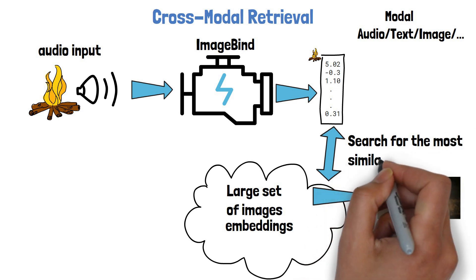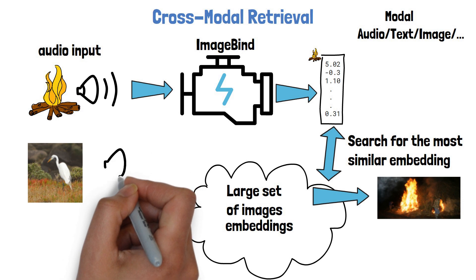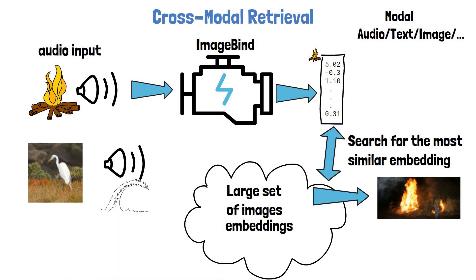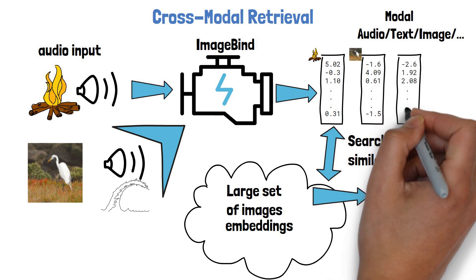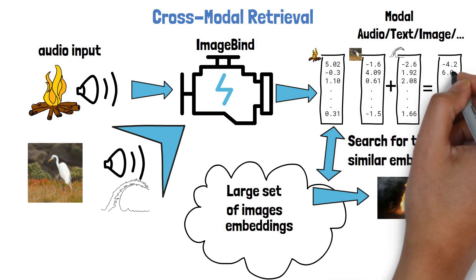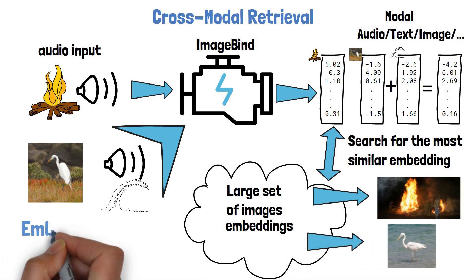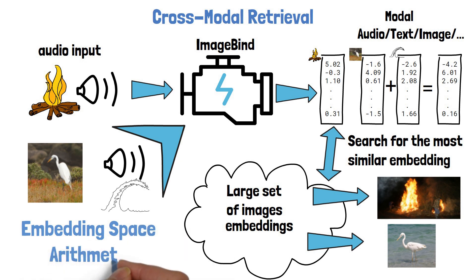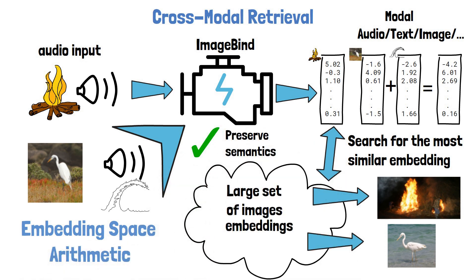What's even more impressive is that with ImageBind we can also take an image of a bird and the sound of waves, gather embeddings from ImageBind, then sum these embeddings together, and retrieve an image similar to the embedding sum — getting an image of the same bird in the sea. This shows that embedding space arithmetic naturally composes semantics, which is simply mind-blowing.